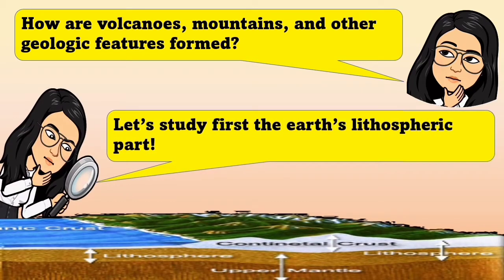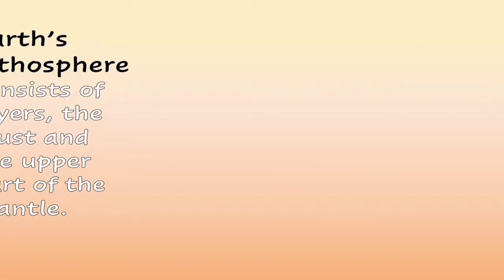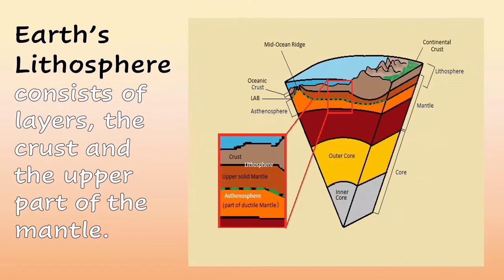Let's study first the Earth's lithospheric part. The Earth's lithosphere consists of layers — the crust and the upper part of the mantle. The crust is made of a variety of solid rocks like sedimentary, metamorphic, and igneous. It has an average density of 2.8 grams per cubic centimeter, and its thickness ranges from 50 kilometers.